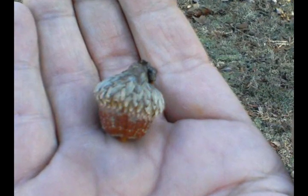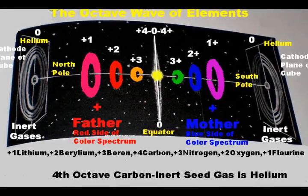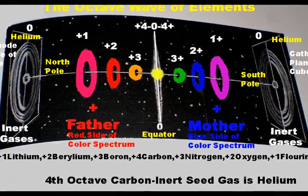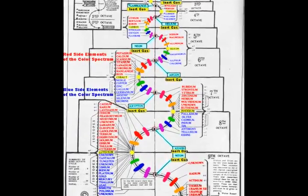That is something which the physicist can more readily understand when you tell him that the imperishable, invisible seed within that acorn is an inert gas, or a combination of several octaves of inert gases.